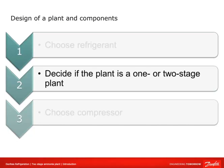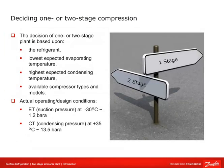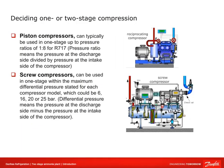We need to decide the number of cooling stages — one or two — which depends on the refrigerant chosen, the lowest evaporating temperature, the highest condensing temperature, and the available compressor types and models. The design conditions are a suction temperature of -30°C and a condensing temperature of +35°C. Piston compressors can typically be used in one stage up to pressure ratios of 1:8 for ammonia. Screw compressors can be used in one stage within a maximum differential pressure — which could be 6, 16, 20, or 25 bar — where differential pressure is the discharge pressure minus the intake pressure.